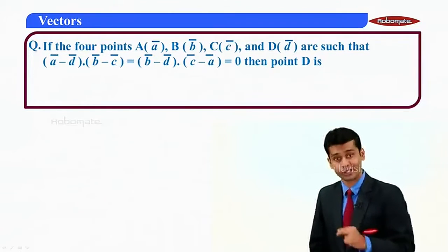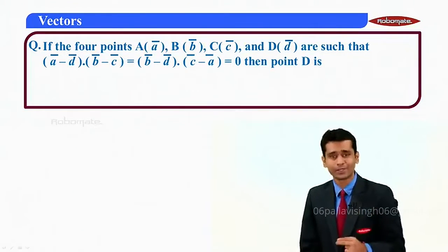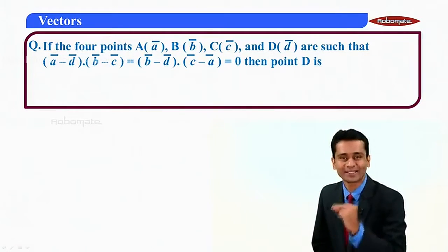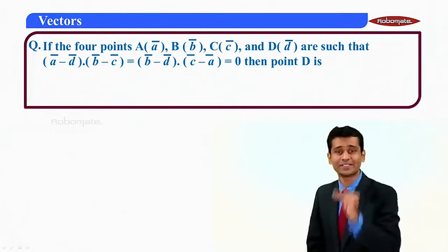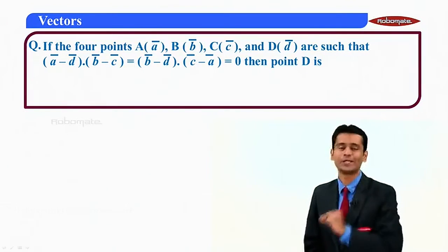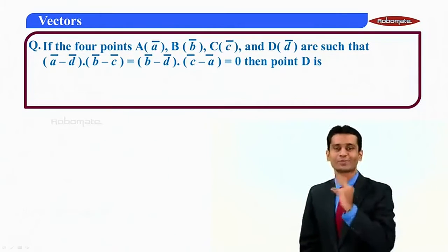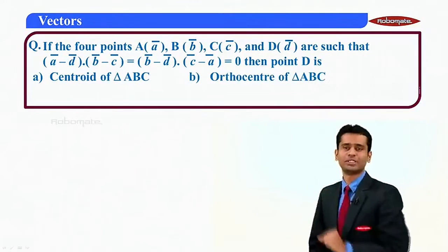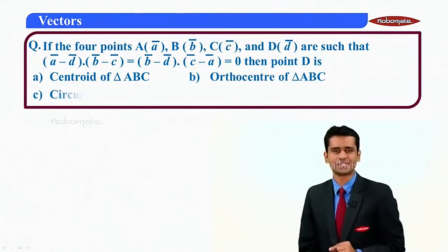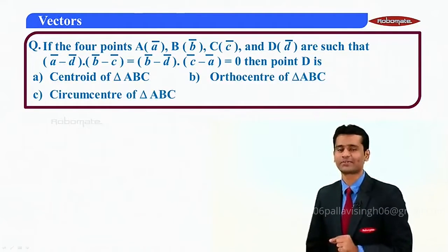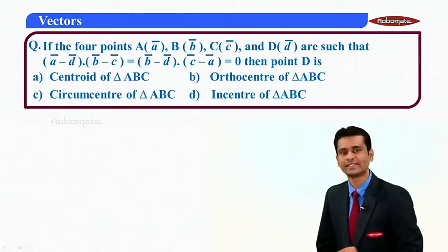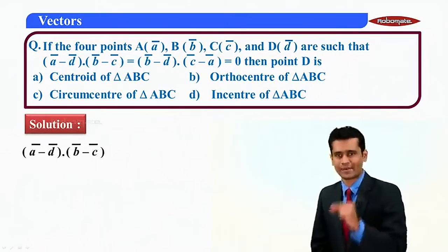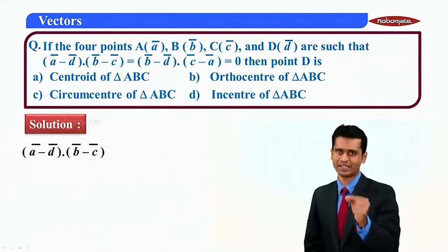Let us see the second multiple choice question. The question says there are four points A (a-bar), B (b-bar), C (c-bar), and D (d-bar) such that (a-bar − d-bar)·(b-bar − c-bar) = 0 and (b-bar − d-bar)·(c-bar − a-bar) = 0. Then what is point D? Option A: centroid of triangle ABC. Option B: orthocenter. Option C: circumcenter. Option D: incenter of triangle ABC.